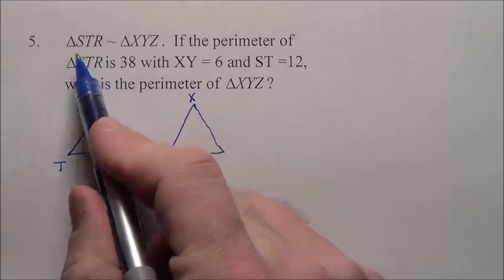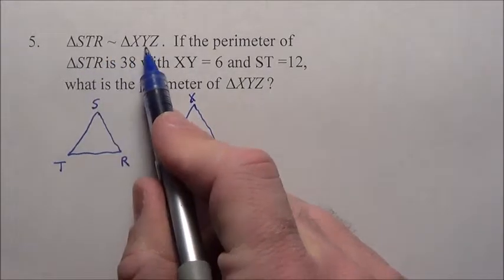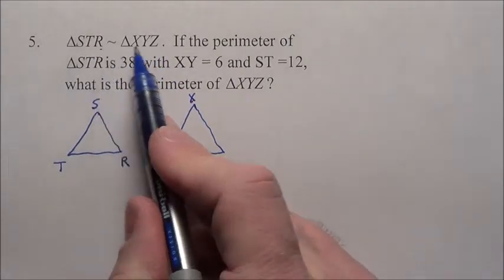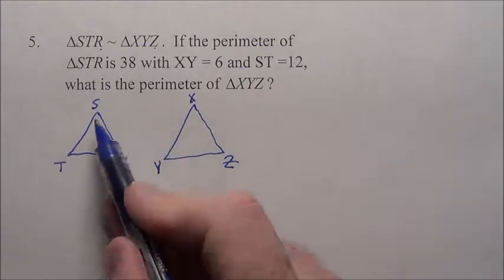But I'm going to do it X. Since S and X correspond, I'm going to draw them in the same spots, T and Y, so I'm going to put the Y right here, and Z corresponds to the R. See R, Z, so here's R on the right, so I'm going to put Z right here, so I know those all match up.